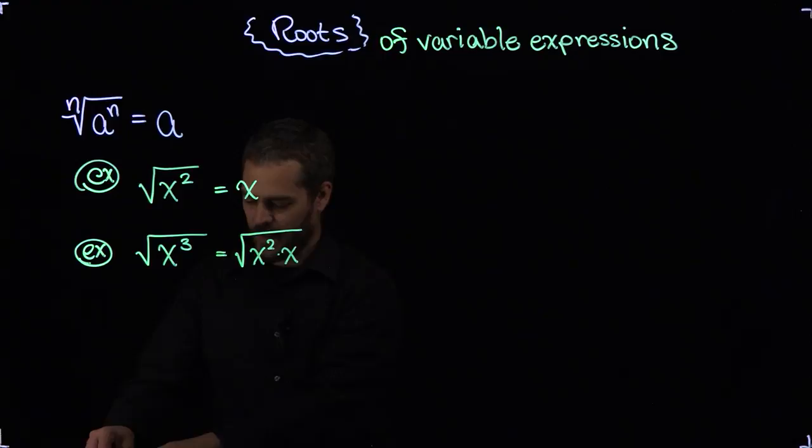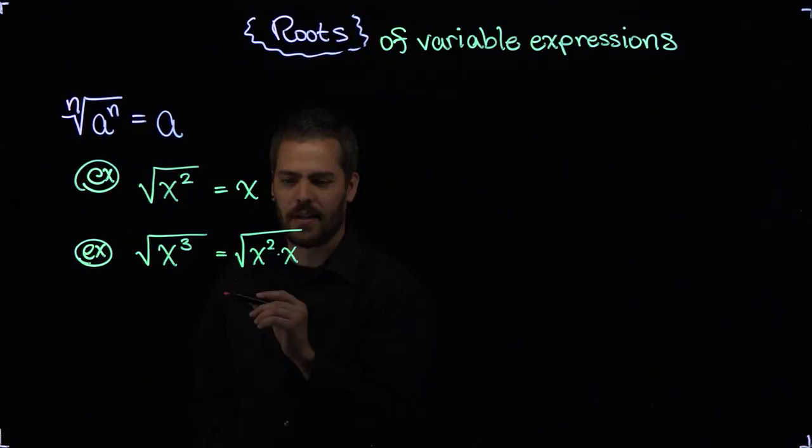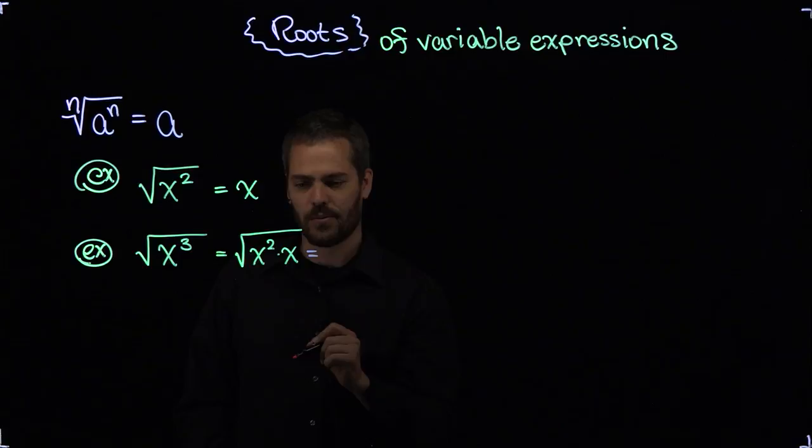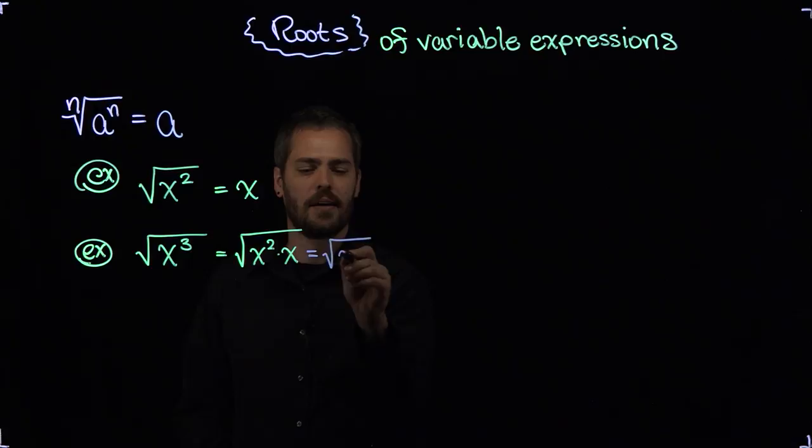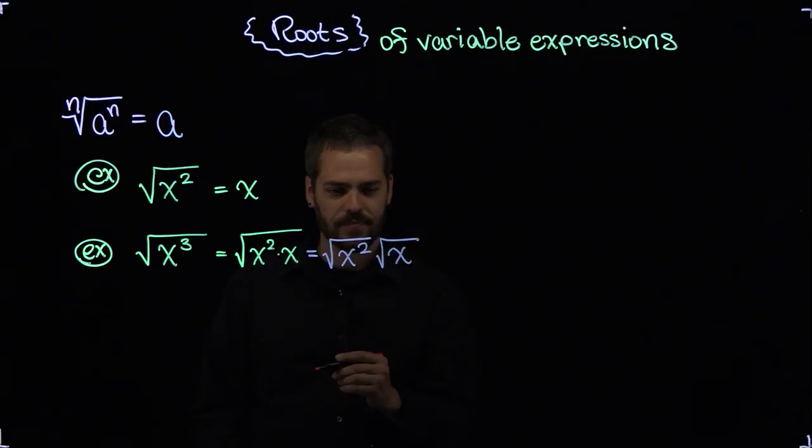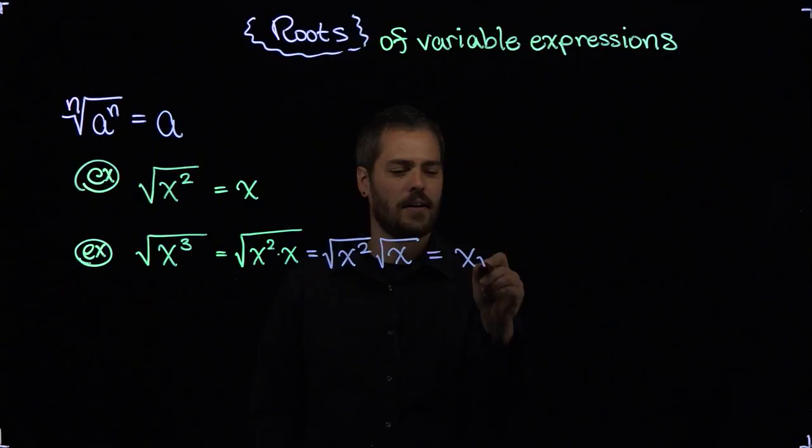And indeed x squared times x is x cubed, but what I'm really interested in because my index is a number 2 here, I'm interested in x's that are squared and I'm going to separate this root using one of the rules of roots that were explained earlier to say this is the same thing as the square root of x squared times the square root of x. The square root of x squared is x.